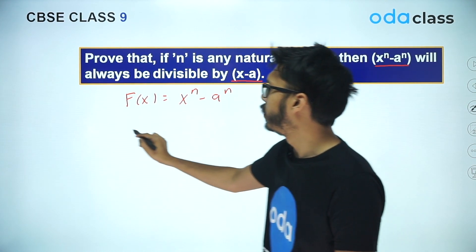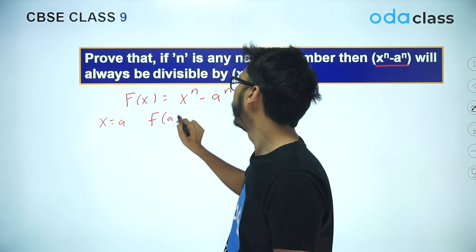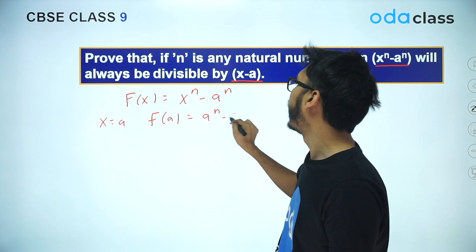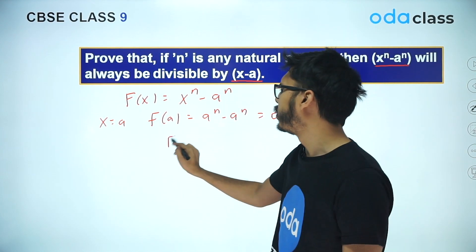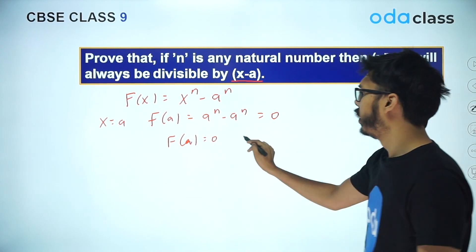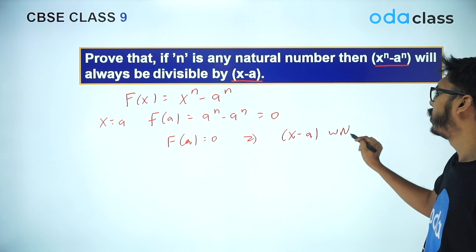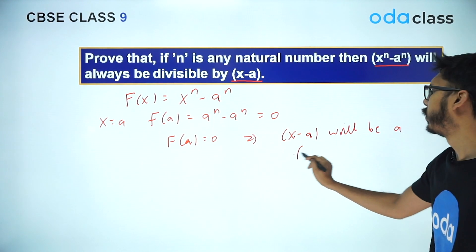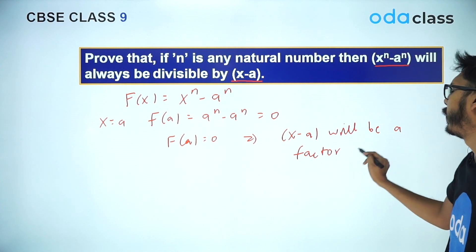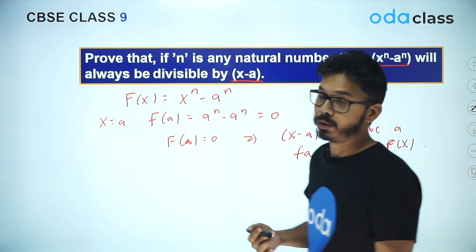Since F(a) = 0, by Factor Theorem, (x - a) will be a factor of F(x). And if (x - a) is a factor of F(x), then F(x) is divisible by (x - a). So x^n - a^n is always divisible by (x - a) for any natural number n.